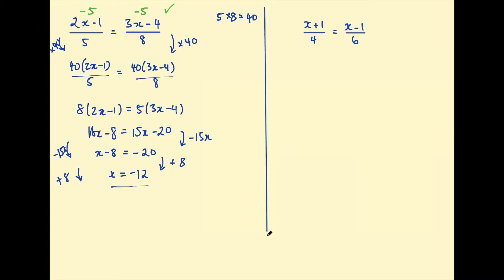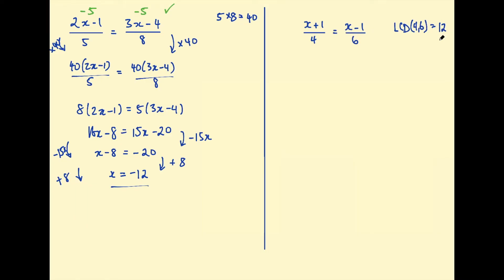The next example. We have x plus 1 over 4 equal to x take 1 over 6. Now here we could multiply by 4 multiplied by 6, so we could multiply by 24, or we could multiply by the lowest common denominator of 4 and 6. The lowest common denominator of 4 and 6 — the lowest common multiple — is 12, because 4 goes into 12 and 6 goes into 12. That's the lowest number they both go into. So here I'm actually going to multiply by 12. You don't always have to multiply these two numbers together — you can multiply by a lower number and it makes things a bit simpler because you don't have to work with as large numbers.